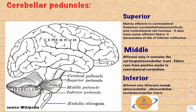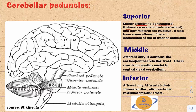The cerebellum has three peduncles: the superior, middle, and inferior cerebellar peduncles. The superior cerebellar peduncle is mainly efferent, carrying fibers from the cerebellum toward other structures — specifically the contralateral thalamus via the cerebellothalamocortical tract, and the contralateral red nucleus. It is the only peduncle that carries efferent fibers.